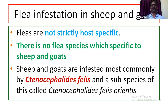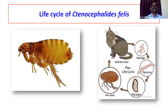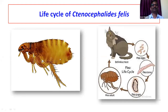Sheep and goats are most commonly infested by Ctenocephalides felis, which is commonly found infesting domestic cats, dogs, and other canids. In Indian conditions, this species is a subspecies, Ctenocephalides felis orientis. This flea is commonly called the cat flea. If captured, they can be easily identified.